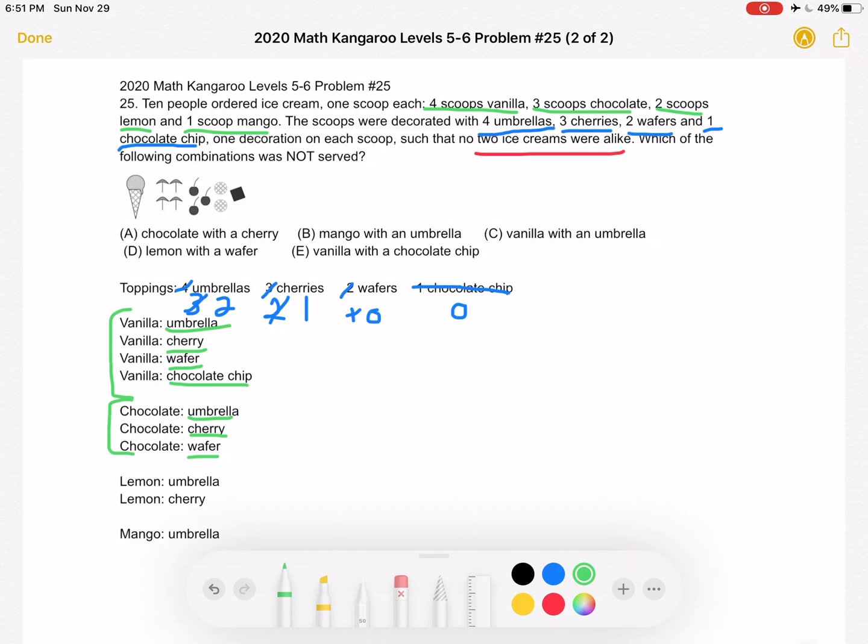Now let's go on to lemon. We have two scoops of lemon, and the only two toppings we have left are umbrellas and cherries. So we're going to have one scoop with an umbrella and one scoop with a cherry. So now going back, now one umbrella left, zero cherries, and we have a scoop of mango which must have an umbrella. That's the only topping left.